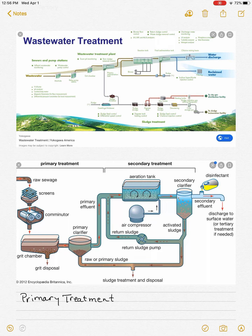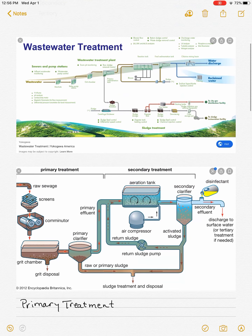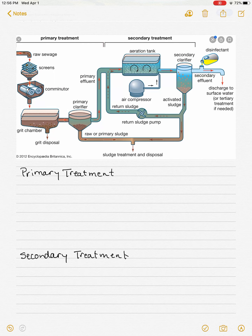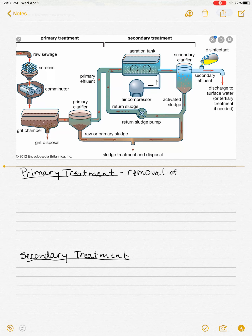I have two schematics here for you to consider. Let's look at the second schematic, which shows two things: primary treatment and secondary treatment. Primary treatment is the removal of solids and fats, and it is mechanical — everything that happens in primary treatment involves some sort of mechanical means.